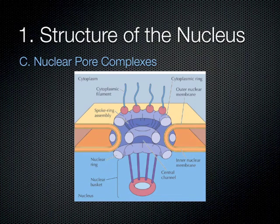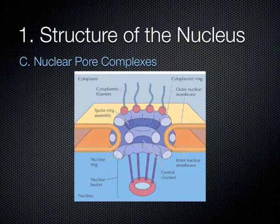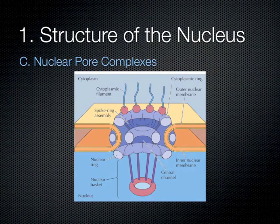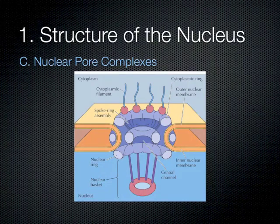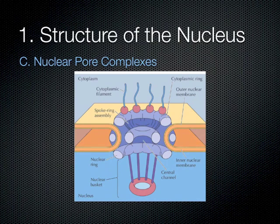On top of the cytoplasmic ring there are structures called cytoplasmic filaments — long arms projecting into the cytoplasm. On the other end of the nuclear pore complex, there are extensions that look like a basket, projecting into the nucleoplasm inside the nucleus. Those components — the cytoplasmic extensions and the basket projection facing the nucleoplasm — are not symmetrical.